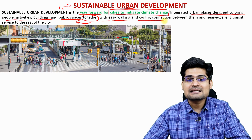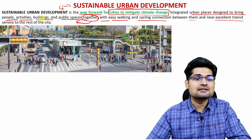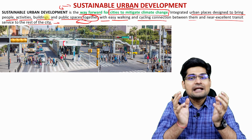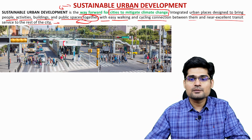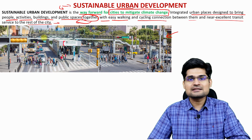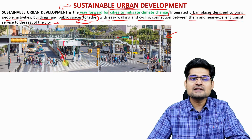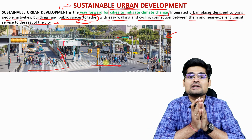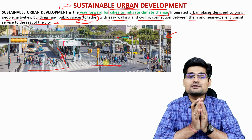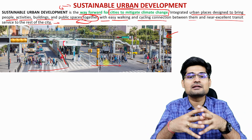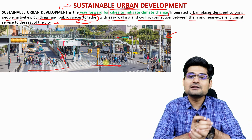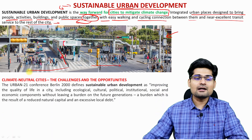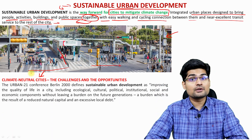Integrated urban spaces are designed to bring people, activities, buildings, and public spaces together in a network, making it easy for people to live in those cities — for example, easy walking and cycling connections between them and excellent transit service to the rest of the city. We are talking about mobility and livability of the people. A smart city integrates connectivity, movement of people, and hybridization with nature alongside the constructed part of the city.